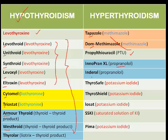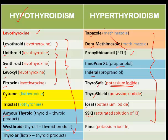Propranolol is available as Innopran, Inderal, Inderal LA. And another strong antithyroid agent is potassium iodide, available as ThyroSafe, ThyroShield, LOSAT. SSKI is saturated solution of potassium iodide. So, any of these drugs you find in the medication list for the patient, you can conclude that the patient is hyperthyroid.